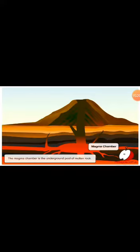The magma chamber is the underground pool of molten rock. The pipe is what connects the magma chamber to the earth's surface.